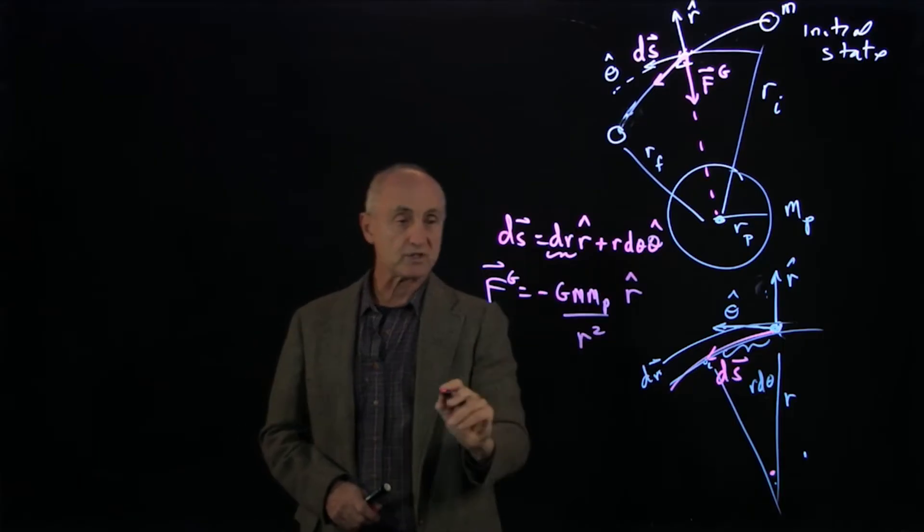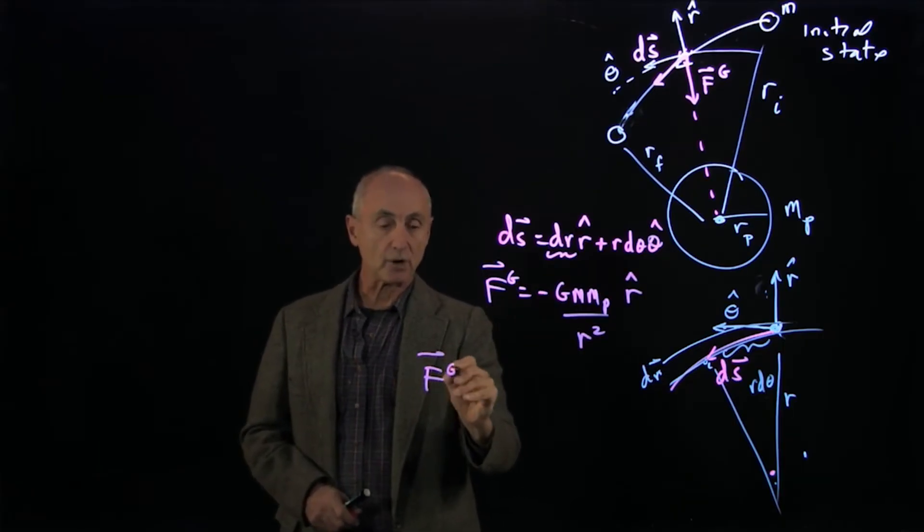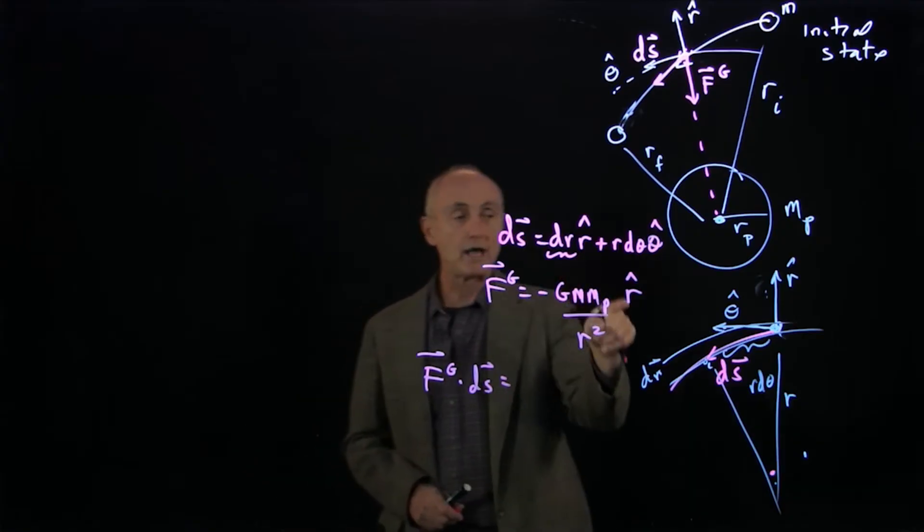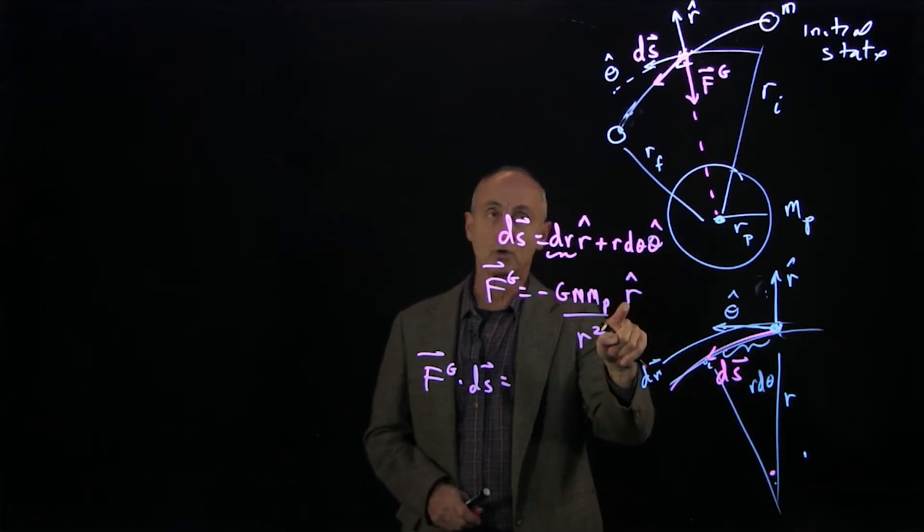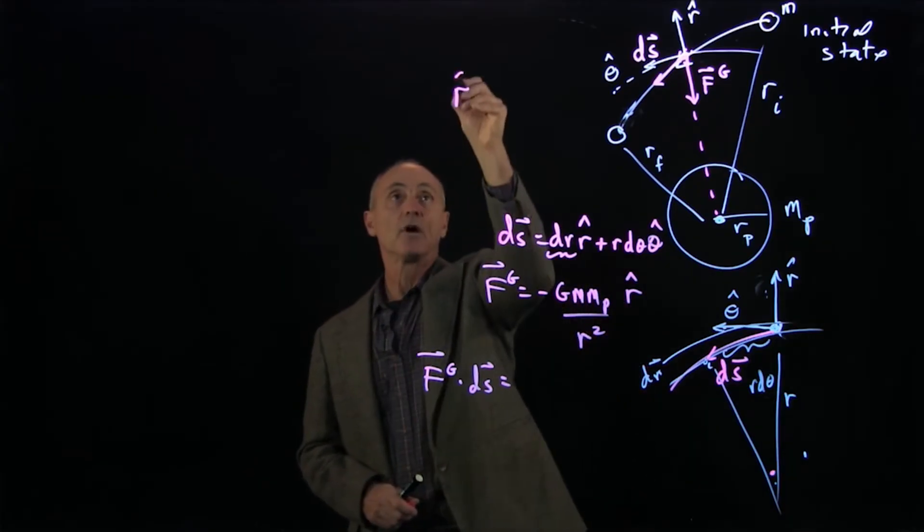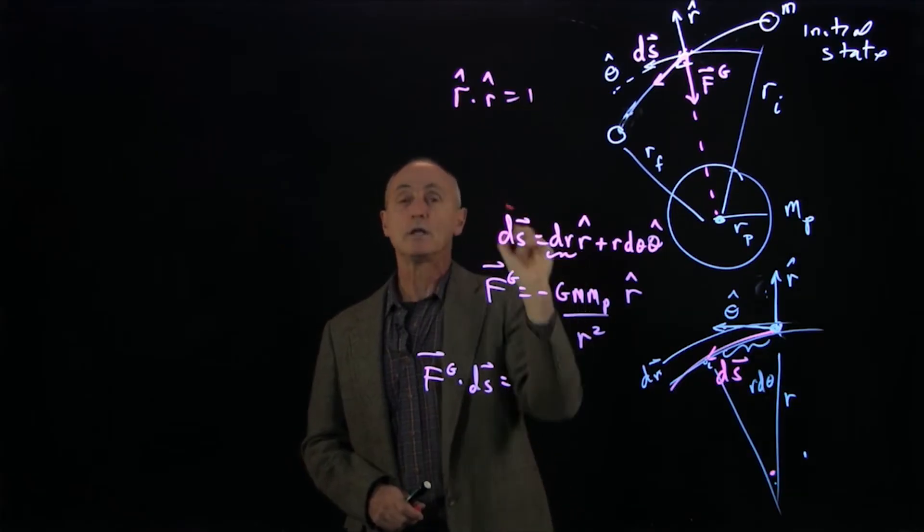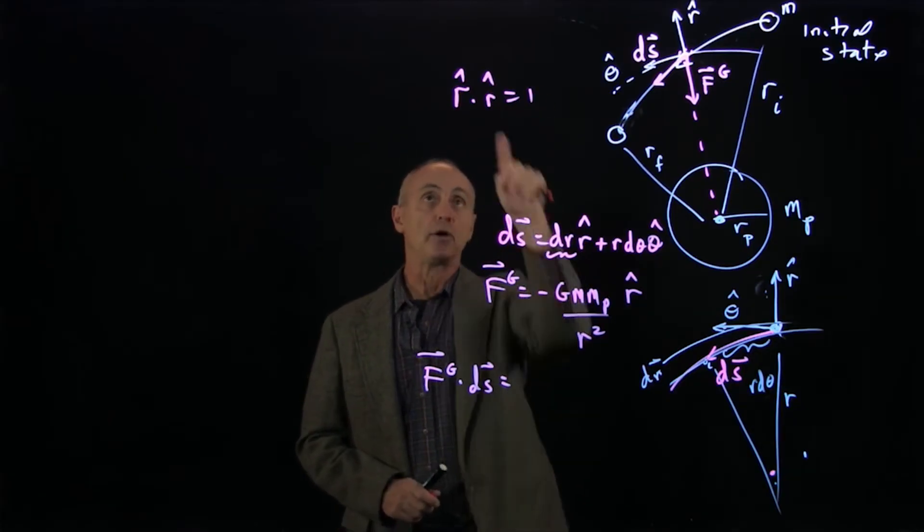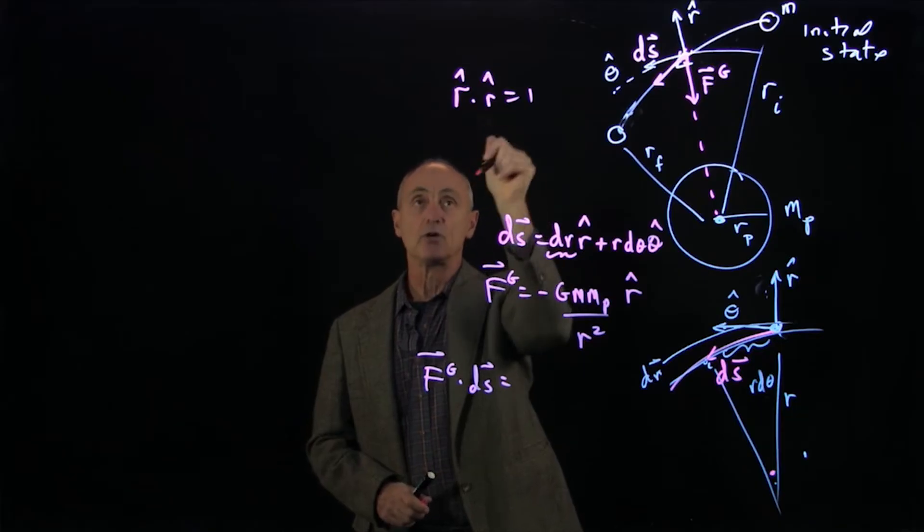So now what we see is that when we take the dot product of these two forces, r hat dot r hat is 1 in polar coordinates. Why is that the case? Because these vectors are in the same direction. The angle between them is 0.